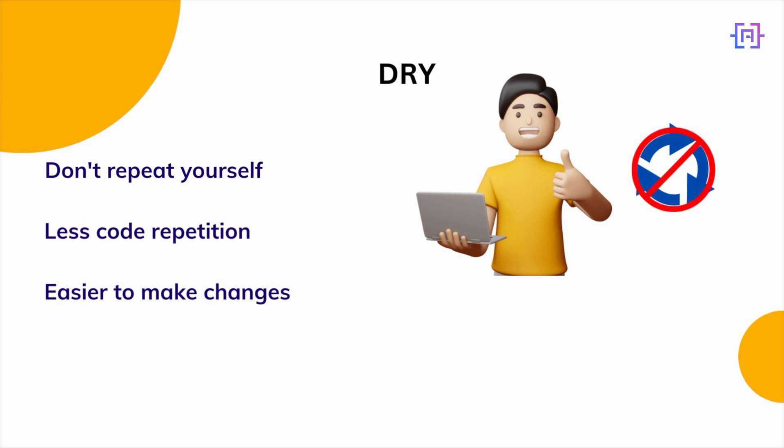The DRY principle is another important one. DRY is an abbreviation for Don't Repeat Yourself. It states that you shouldn't be repeating code to cover a specific functionality throughout your application. If you are doing the same thing in multiple places you are bound to make errors, since you need to make the change in multiple places instead of just one. Encapsulating a certain functionality in a specific component makes your code easier to change and will end up giving you fewer errors.